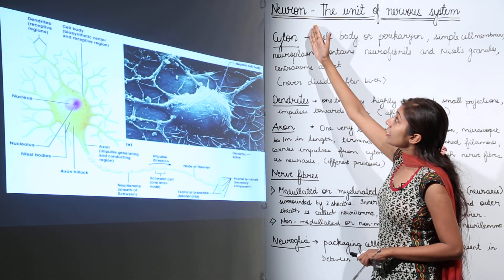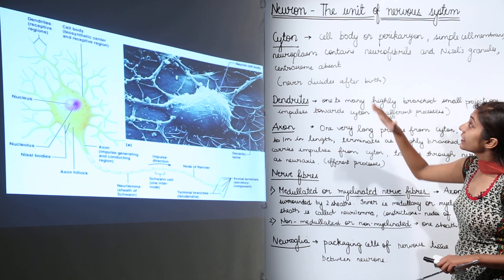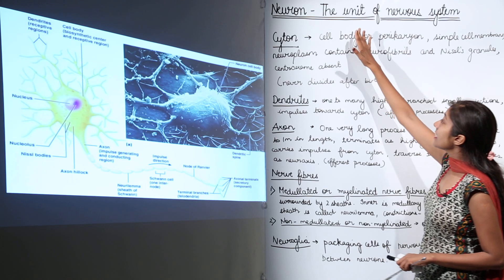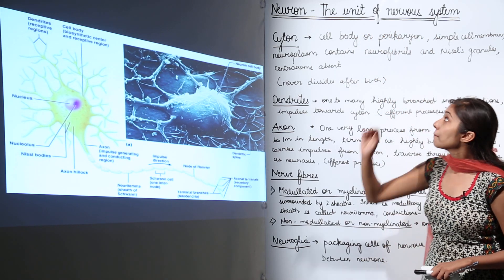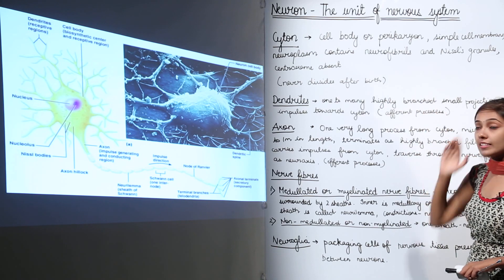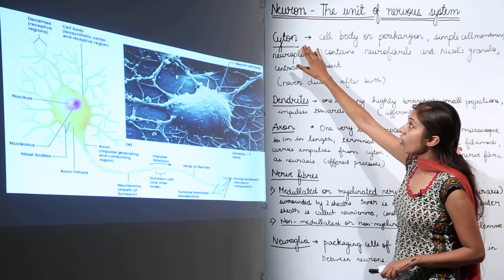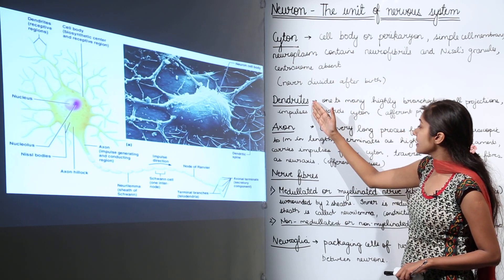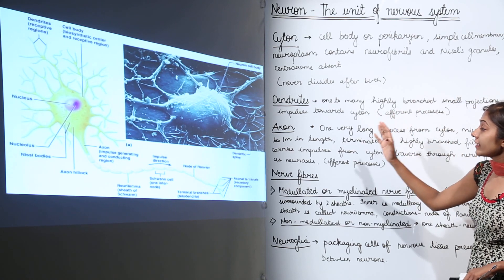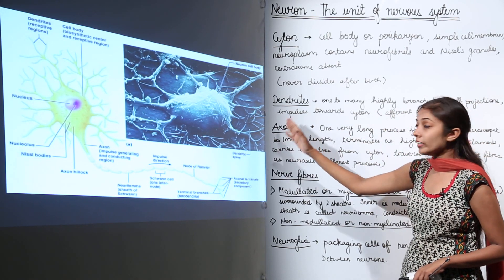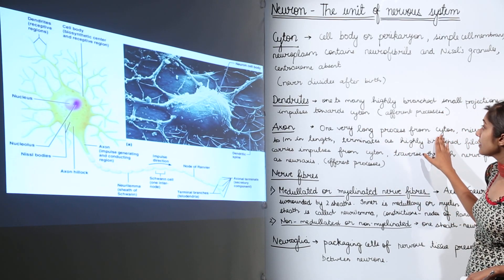The first component is the neuron — it is a nerve cell and the basic main unit of the nervous system. The neuron has three main parts: the cytone, which is the cell body; the dendrites, which are branches arising from the cytone; and the axon, which is the long process that also arises from the cytone.